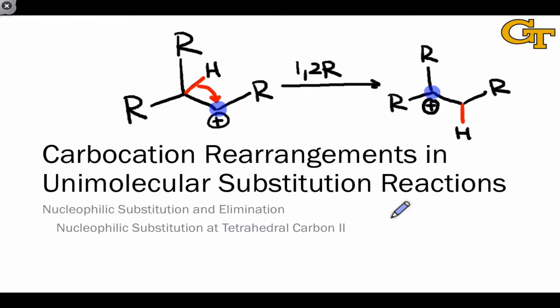This means it's very important to consider the possibility of 1,2 rearrangements in mechanisms involving carbocations. In this video, we're going to deepen our understanding of unimolecular substitution, or SN1, by integrating 1,2 rearrangements into our understanding of the possibilities for the carbocation intermediate of these reactions.